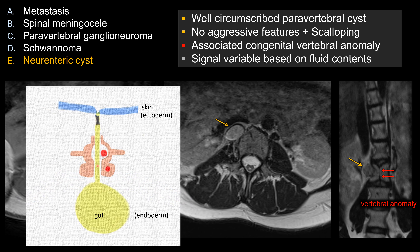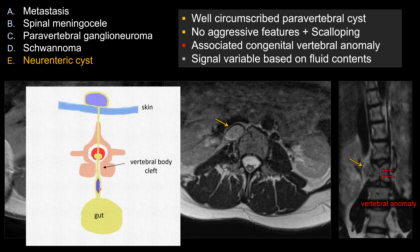As that connection elongates, you can imagine that anywhere along this fistula, you can have cysts. Sometimes cysts form anterior to the vertebral body or in a paravertebral location, which is the most common location for neuroenteric cysts. But essentially anywhere along the track you can have development — anterior to the vertebral body, inside the spinal canal, posterior to the vertebral column, or even extending out to the skin, which becomes a neuroenteric fistula, a very rare entity. That's why neuroenteric cysts have this classic appearance of a paravertebral cyst with adjacent vertebral body anomaly.